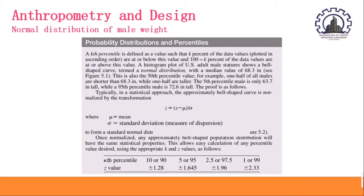A kth percentile is defined as a value such that k percent of the data values, plotted in ascending order, are at or below this value, and 100 minus k percent of the values are at or above this value. A histogram plot of U.S. adult male stature shows that bell-shaped curve, termed as normal distribution, with a median value of 68.3, which is also the 50th percentile value. For example, one half of all males are shorter than 68.3 while one half are taller. The 5th percentile male is only 63.7 inches tall, while a 95th percentile male is 72.6 inches tall.